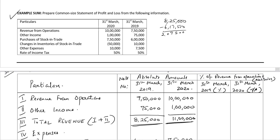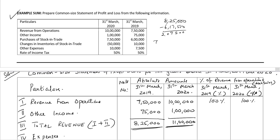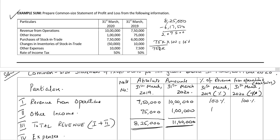Now we need to calculate the percentage columns. We equate revenue from operations of each year to 100%. Beginning with 2019, we equate ₹7,50,000 to 100%. For other income: ₹75,000 divided by ₹7,50,000 multiplied by 100 equals 10%. So the total revenue percentage is 110%.